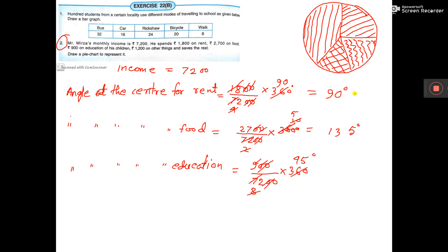So this is the pie chart. You can write here, this is food inside, and this one 90 degrees for rent.